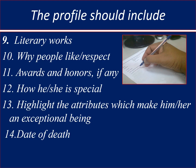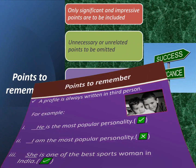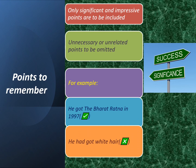These are the main features of a profile. While writing the profile, keep these points in mind. A profile is always written in third person — for example, 'He is the most popular personality' or 'She is one of the best sportswomen in India.' Here, 'he' and 'she' are the third person. Also, only significant and impressive points are to be included, and unnecessary or unrelated points are to be omitted.